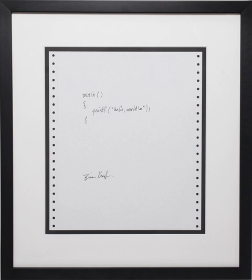A computer program is a collection of instructions that performs a specific task when executed by a computer. A computer requires programs to function. A computer program is usually written by a computer programmer in a programming language. From the program in its human-readable form of source code, a compiler can derive machine code — a form consisting of instructions that the computer can directly execute.